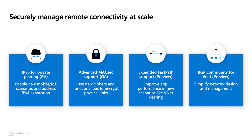FastPath is a performance feature that enables your on-premises traffic to Azure to bypass the ExpressRoute gateway. We've been supporting this feature for some time. What's new here is we've added support for new scenarios like VNet peering and Private Link.